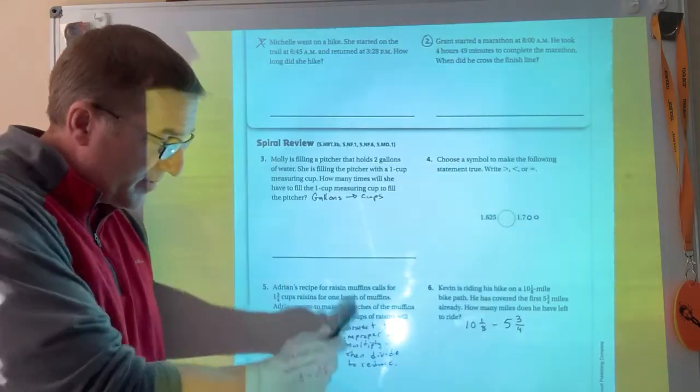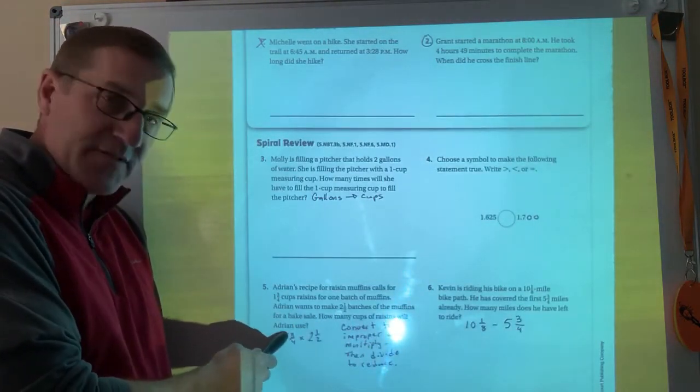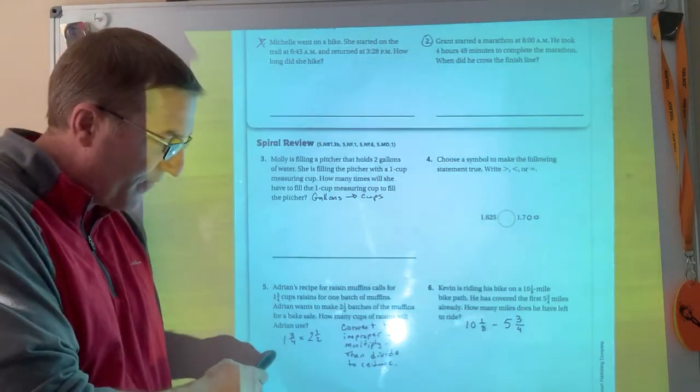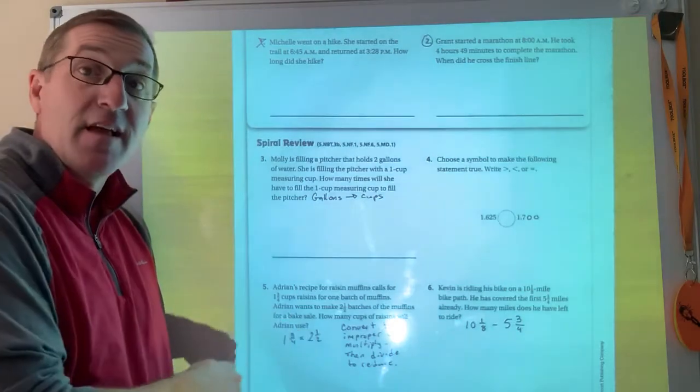To do this, what I'm saying here is convert them to improper fractions. 4 times 1 is 4, plus 3 is 7. So this is 7⁄4. 2 times 2 is 4, plus 1 is 5. That's 5⁄2. Do that.